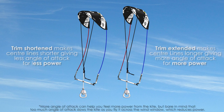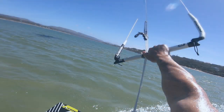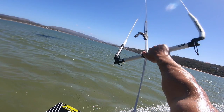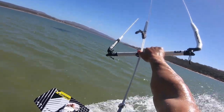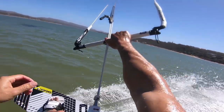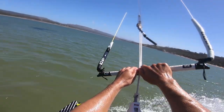The depower strap isn't designed to give on-the-go adjustments like the bar, but it is helpful for trimming your setup. For example, here the kiter is leaning forward to reach the bar, which is spoiling their upwind stance. Shortening the depower rope means the bar can sit closer as you ride.